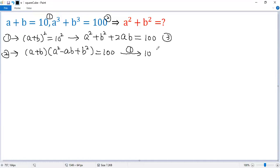So we get 10 times a squared, we write b squared first, so plus b squared and then minus ab equals 100. Both sides divided by 10. So we get a squared plus b squared minus ab equals 10.